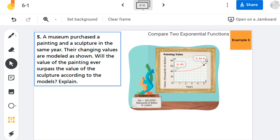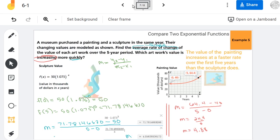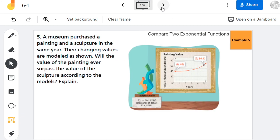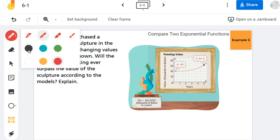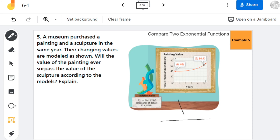So one thing to understand is at five years, the sculpture was worth more than the painting. The sculpture was worth 71 and the painting was worth 64. So in this case, at the beginning of its curve here, I'm going to try to do a rough sketch of the two curves.